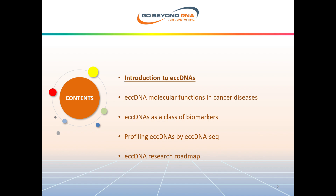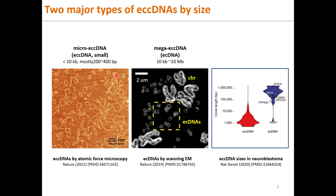Let's first have a look at what ECC DNAs are. ECC DNAs are extra chromosomal circular DNAs endogenously produced from the chromosomes in the nucleus, but they do not include circular mitochondrial DNA genome in the mitochondria or circular plasmid DNAs transfected in their cells. In a genomics context, there are two major types of ECC DNAs by size: micro ECC DNA, or simply ECC DNA, that are less than 10 kilobases.